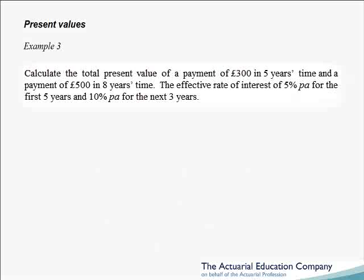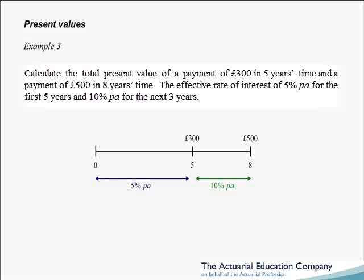Let's do one last example where we have a change in the interest rate. Calculate the total present value of a payment of 300 pounds in 5 years time and a payment of 500 pounds in 8 years time. However, the effective rate of interest is 5% for the first 5 years only, and then 10% for the remaining 3 years. The question is: will our present value be bigger or smaller than the previous example? Because the interest rate is bigger, we only need to invest a smaller amount of money in order to meet these payments — bigger interest rates produce smaller present values.